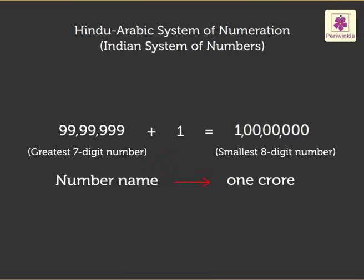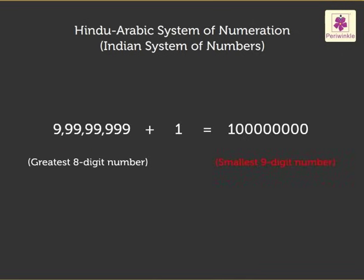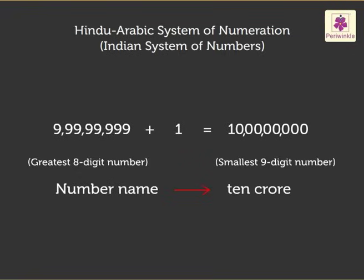We read it as one crore. Similarly, the greatest eight digit number is nine crore ninety-nine lakh ninety-nine thousand nine hundred ninety-nine, and when one is added to it we obtain the smallest nine digit number. We write it as 10,00,00,000 and we read it as ten crore.